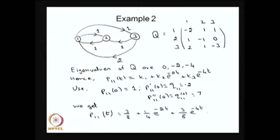My interest is to find out the time-dependent solution for this example. I can write the forward Kolmogorov equation: P'(t) = P(t) × Q. It is a 3×3 matrix, therefore I will have 3 equations. I have one equation where summation of probabilities equals 1, and I can start with the initial condition: the system being in state 1 at time 0 with probability 1. I can solve those three equations with the initial condition and get the solution — that is one way.